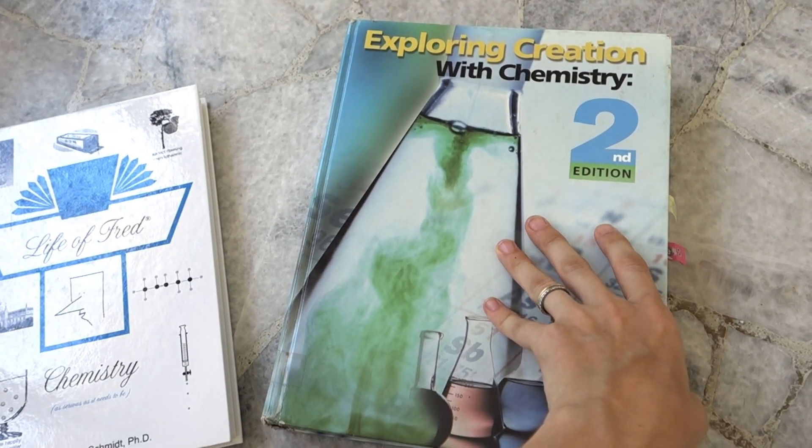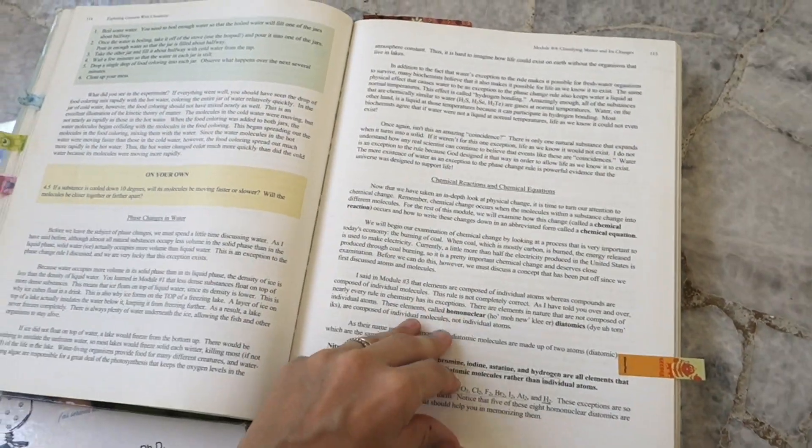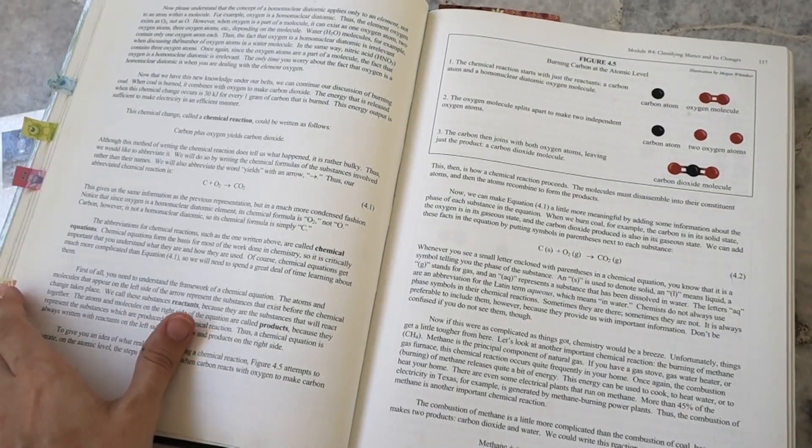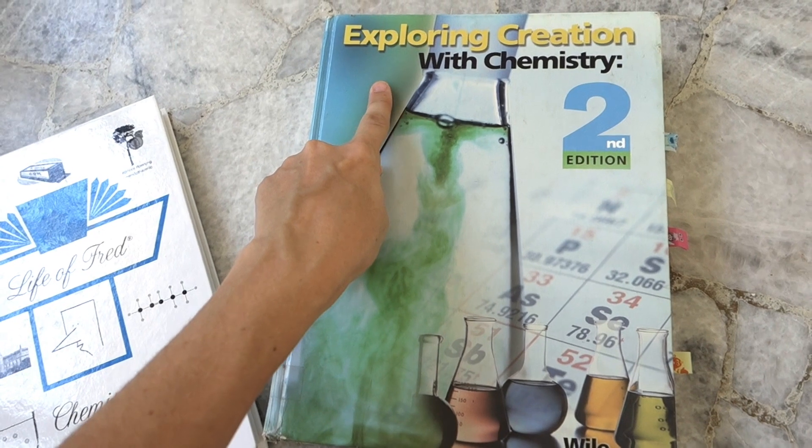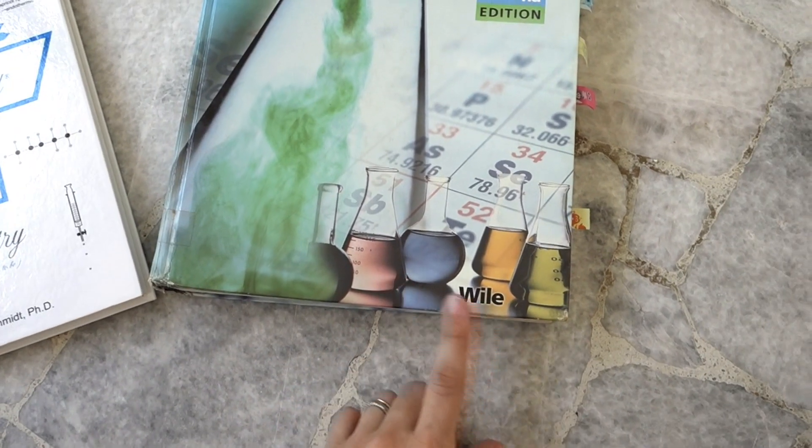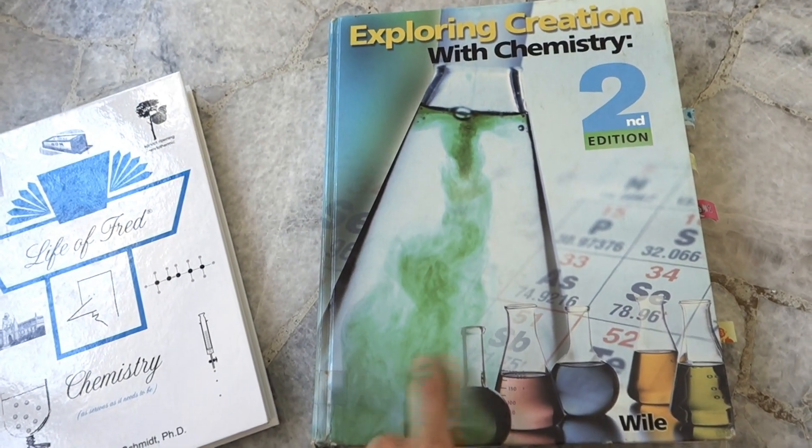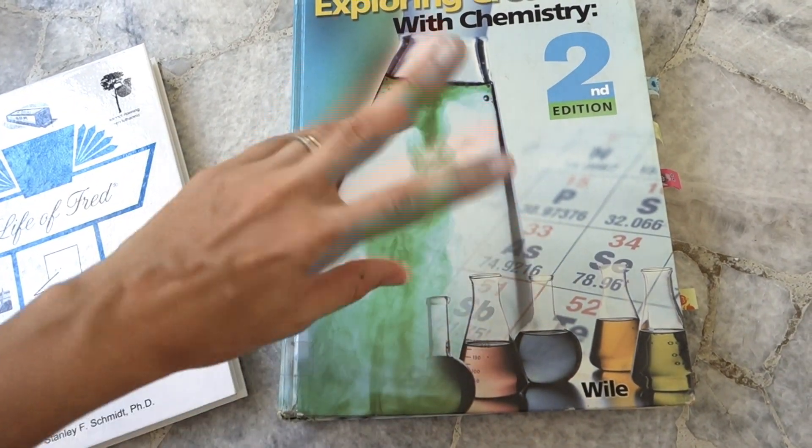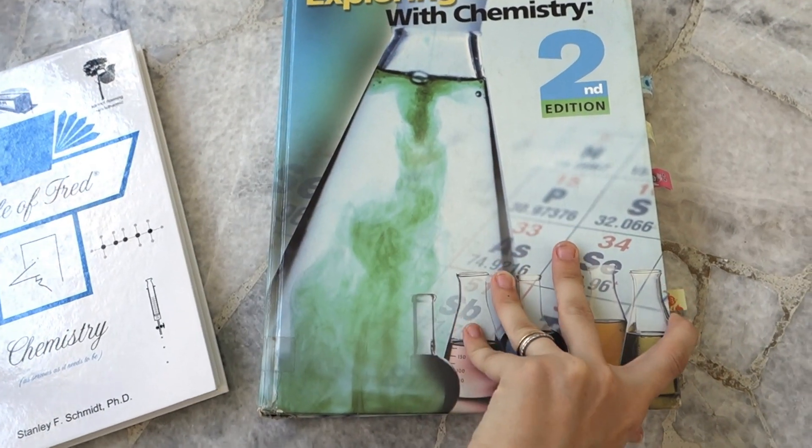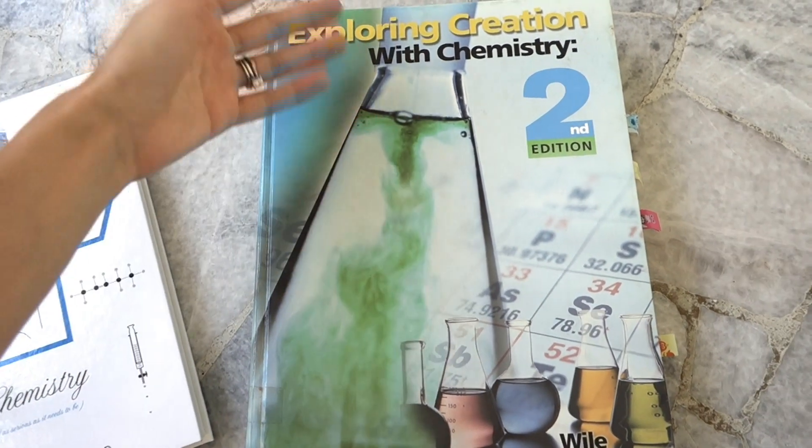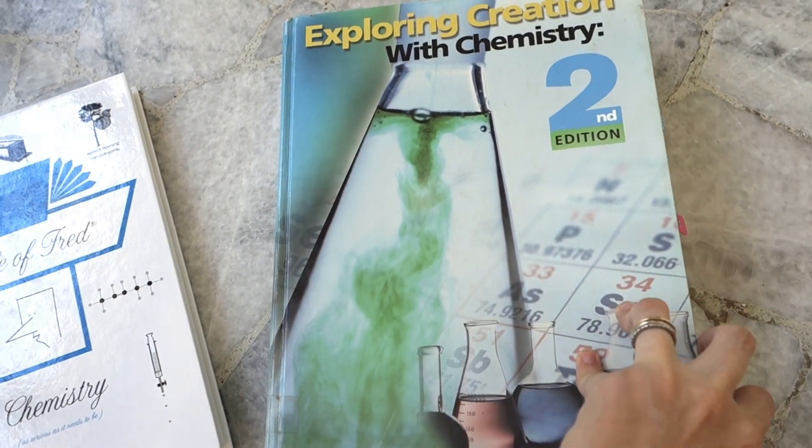So I won't necessarily go too much in depth of exactly details and specifics of this book because it has been replaced. Sunlight now sells the third edition of Exploring Creation with Chemistry, which has different authors than Dr. JL Weil, but it also sells a different book that is by Dr. Weil called something like Discovering Design with Chemistry, which is extremely different name than Exploring Creation with Chemistry.